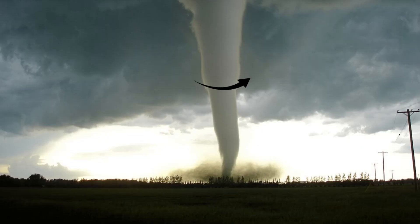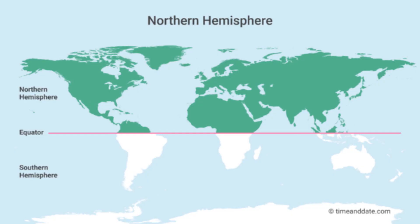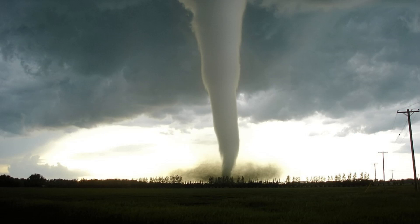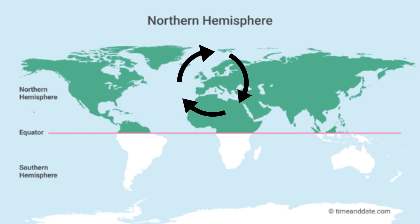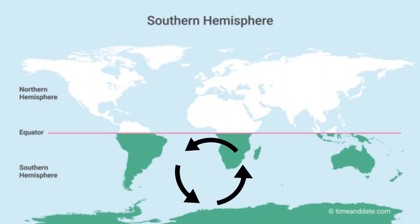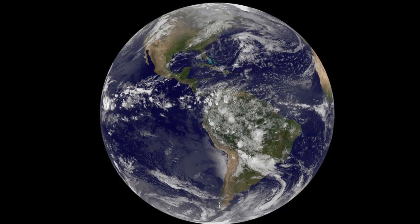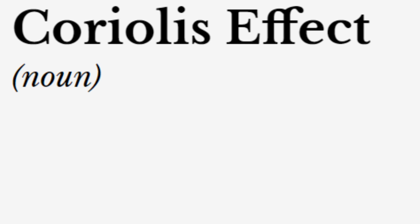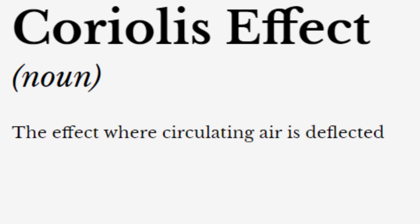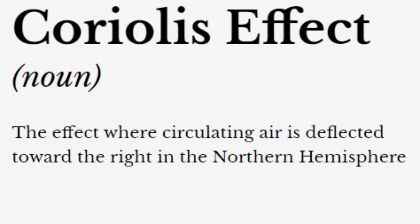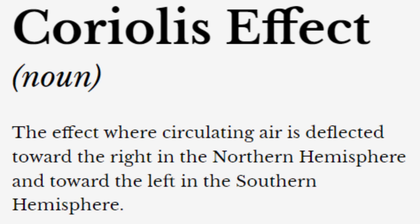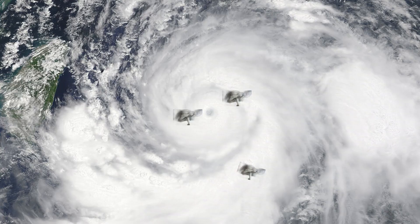You might have heard that tornadoes always spin counterclockwise in the northern hemisphere. However, about 2% of tornadoes rotate anticyclonically — clockwise in the northern hemisphere and counterclockwise in the southern hemisphere. One reason tornadoes can sometimes rotate in the opposite direction is that they are too small to be largely affected by the Coriolis effect, which briefly is the effect where circulating air is deflected toward the right in the northern hemisphere and toward the left in the southern hemisphere. There is a more significant amount of anticyclonic tornadoes associated with tropical cyclones.